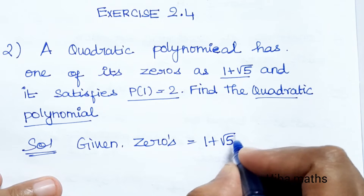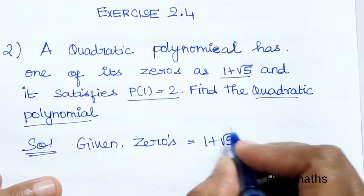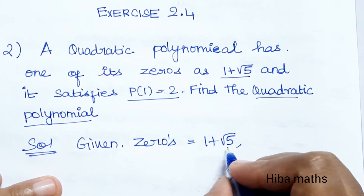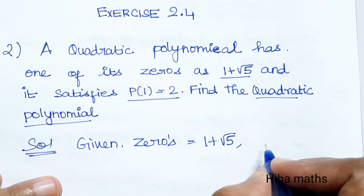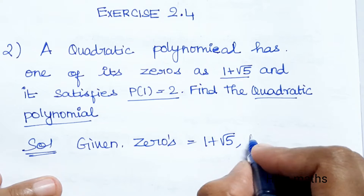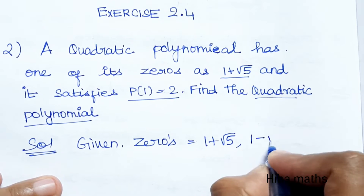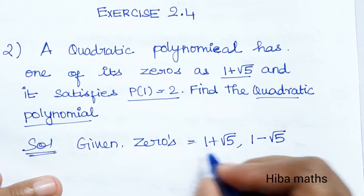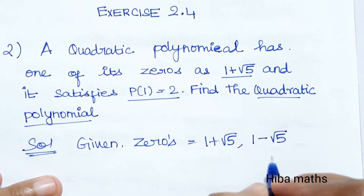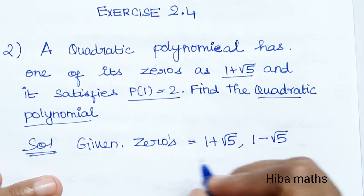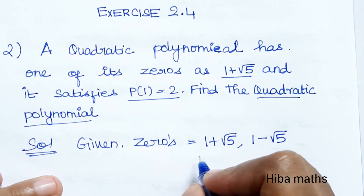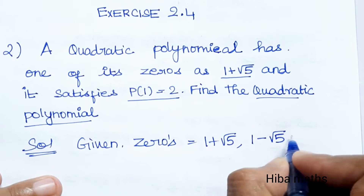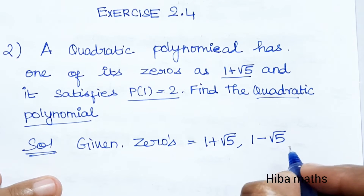Since one root is 1 plus root 5, the other root will be in negative form: 1 minus root 5. So the two zeros are 1 plus root 5 and 1 minus root 5.